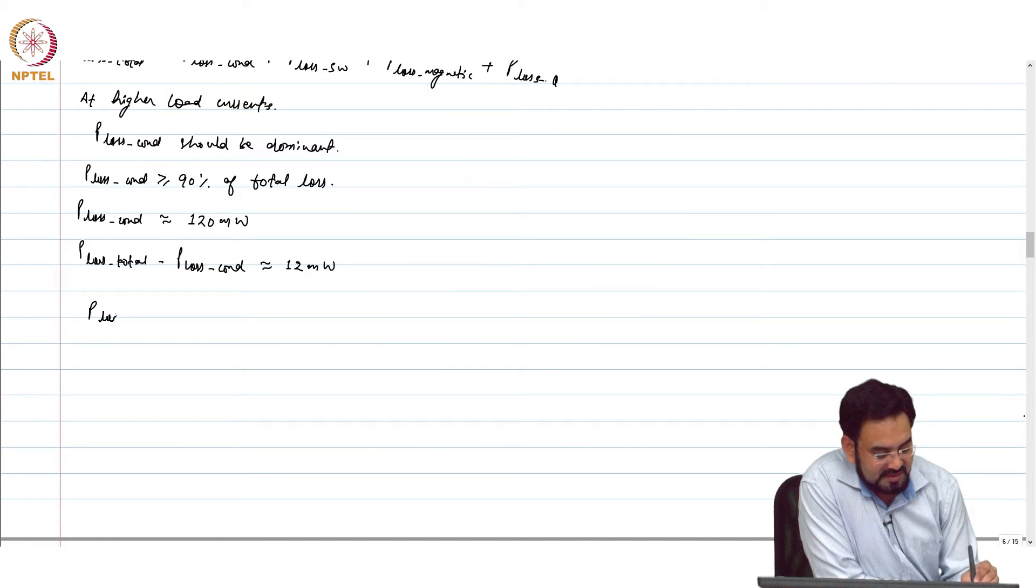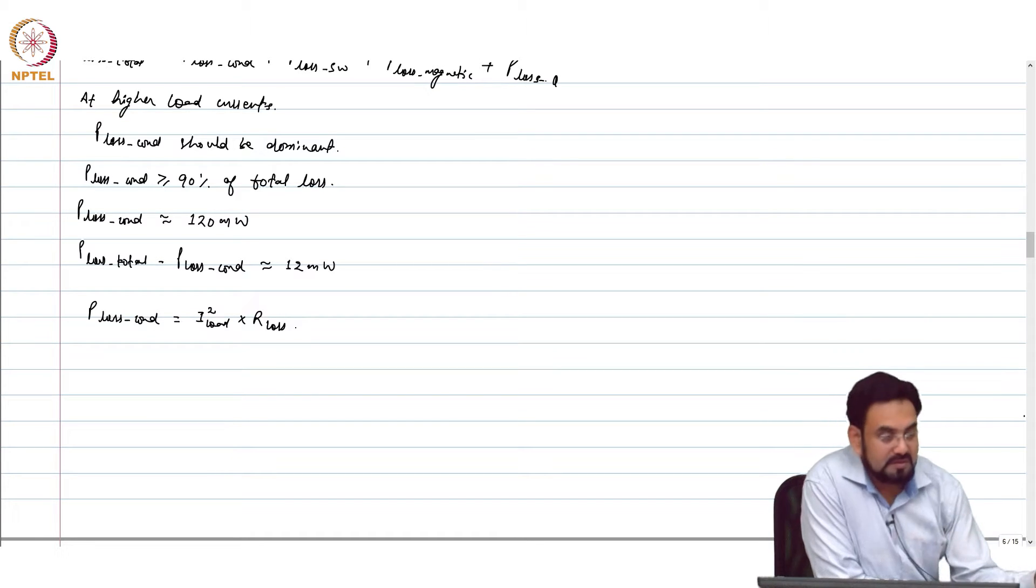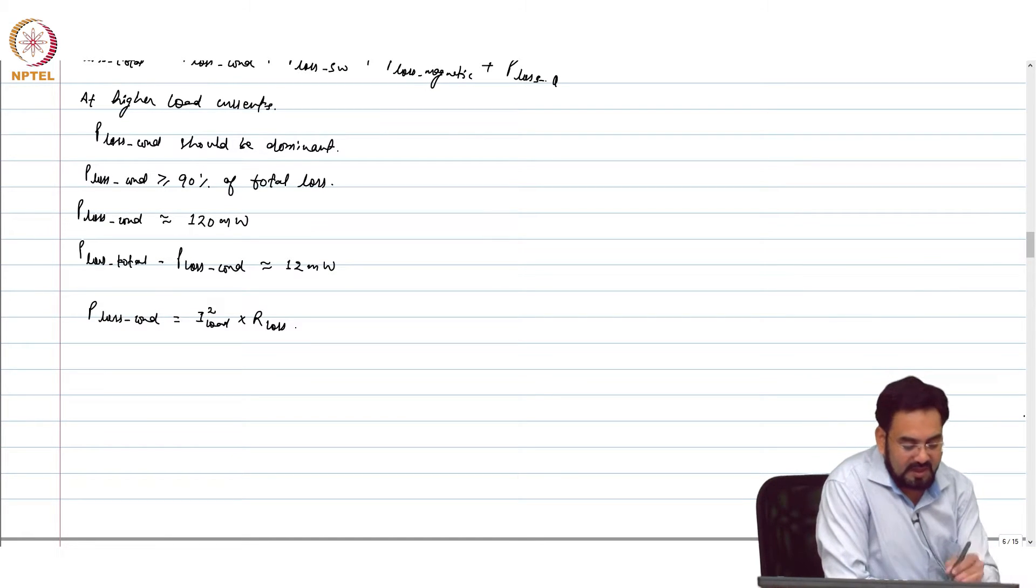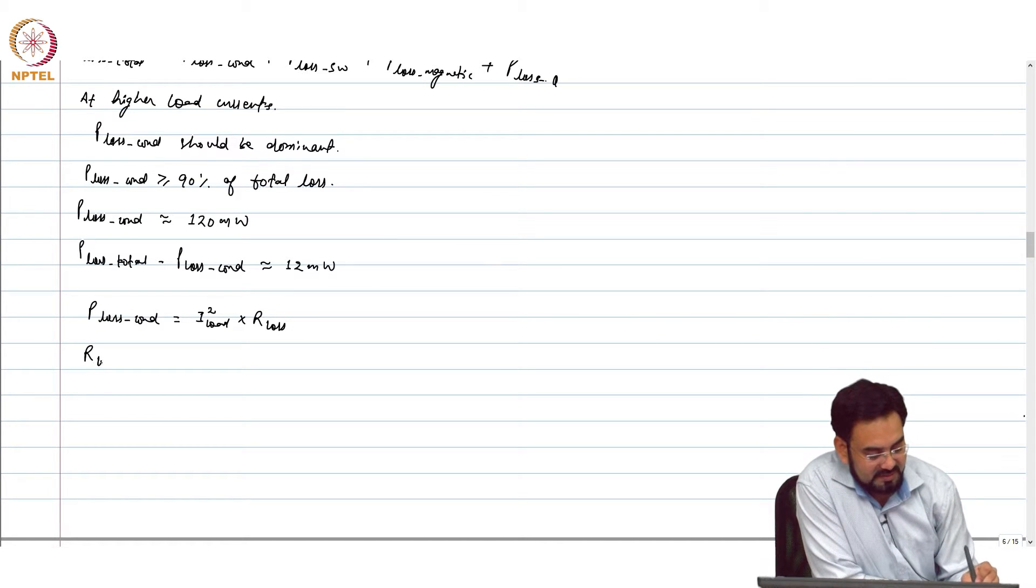And we know P_loss conduction is nothing but I_load squared into R_loss. So, I_load is known. What do we need to calculate? R_loss. So R_loss should be 120 milliwatts divided by 1 ampere squared, which is nothing but 120 milliohms.